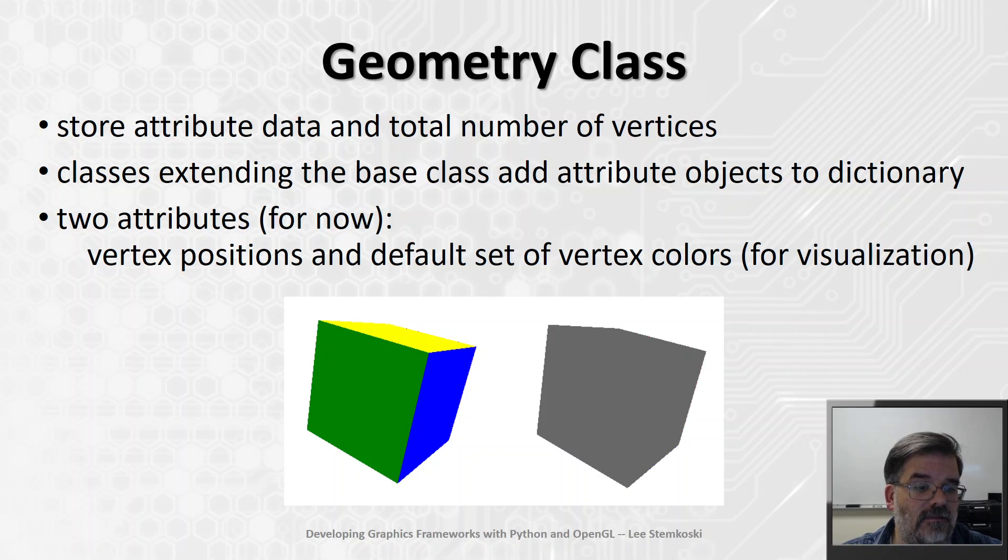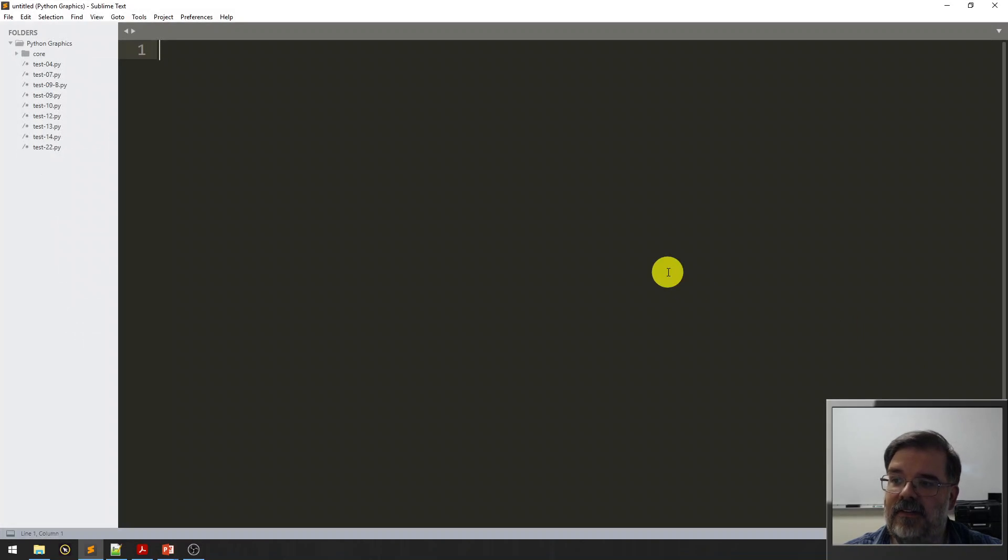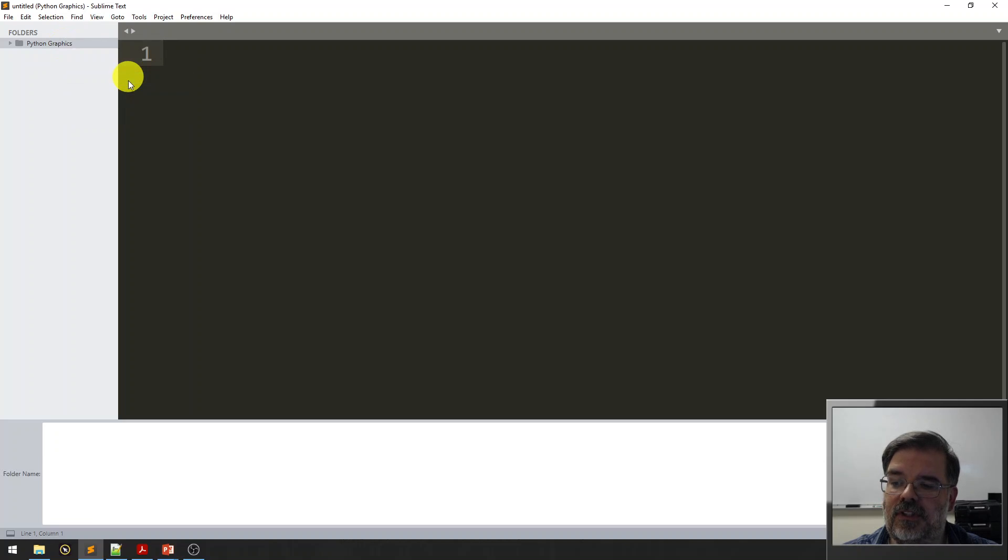We're going to open up our development environment. I'm a big fan of Sublime Text. And we're going to start creating geometry objects. Now, there's going to be a lot of different geometry objects. We're going to be creating rectangles and boxes, spheres, ellipsoids, cylinders, cones, prisms, pyramids, all sorts of things. And that core folder could get cluttered pretty quickly.